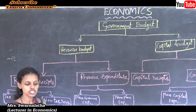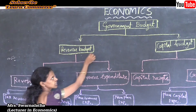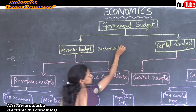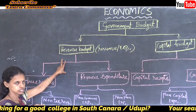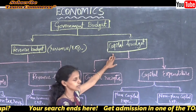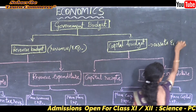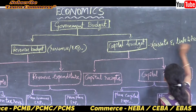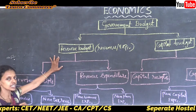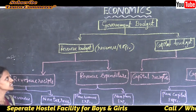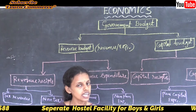Revenue budget includes revenue and expenditure of the government. It is also called as revenue account. The second main type is capital budget or capital account. It includes assets and liabilities of the government. Assets and liabilities of the government are included in the capital budget of a country.